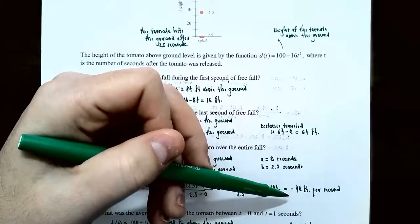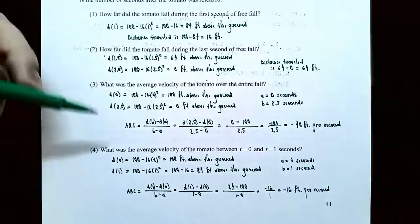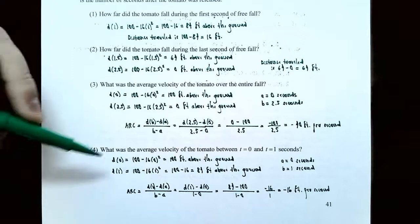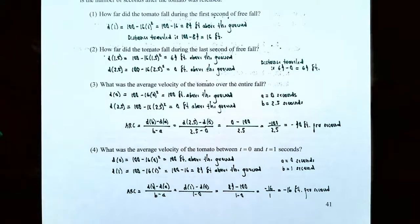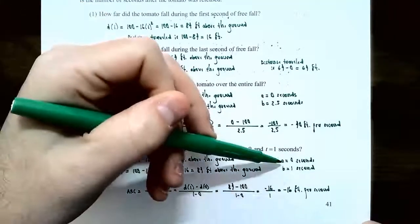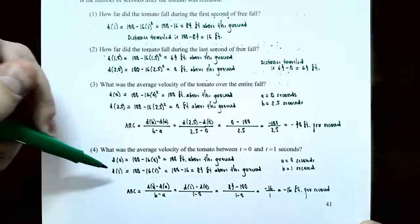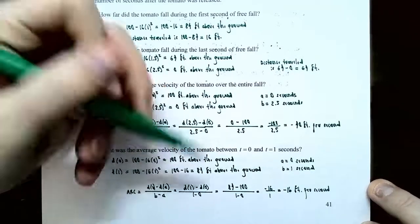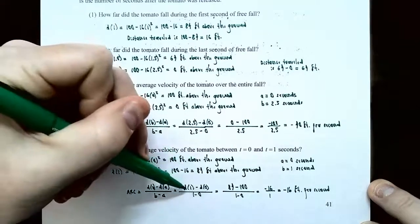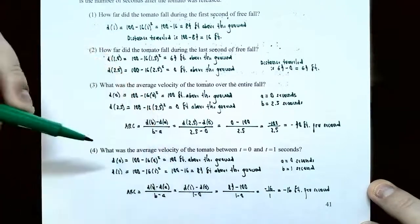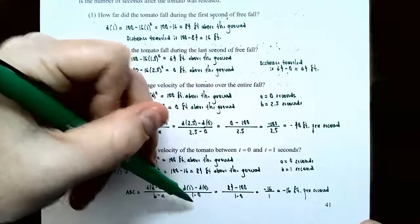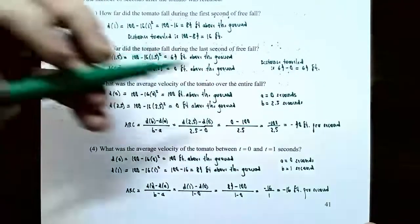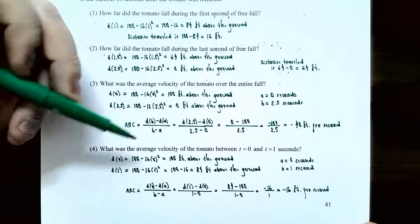Part four: average velocity between zero and one second. With a equals zero and b equals one, the distance at zero seconds is 100 feet and at one second is 84 feet. Using the average rate of change formula: d of one subtract d of zero divided by one minus zero. The numerator is 84 subtract 100 equals negative 16 and the denominator is one. So the average velocity between zero and one second is negative 16 feet per second.